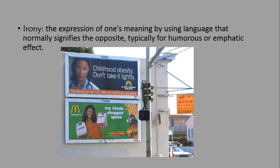Have a look at these two adverts placed below each other. One says 'Childhood obesity — don't take it lightly,' with a doctor wearing a stethoscope. Below it is an advert from McDonald's: 'My kind of shopping spree.' We know that McDonald's has been linked to obesity, and this takeaway food isn't exactly the healthiest. It's ironic that it's placed right below an advert warning of childhood obesity, where McDonald's is promoting the purchase of their product.